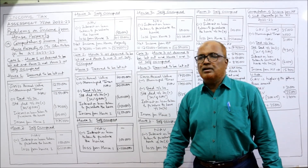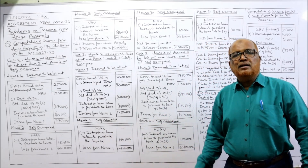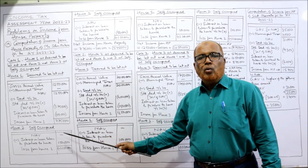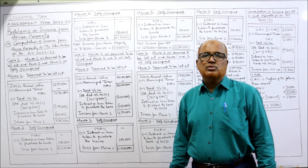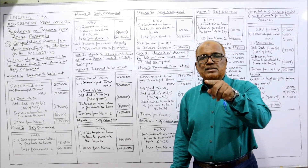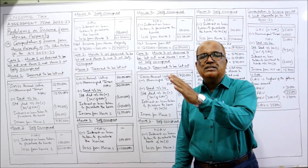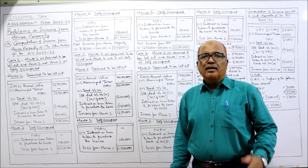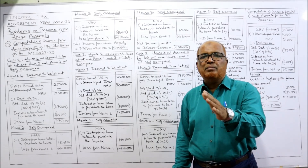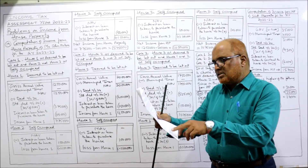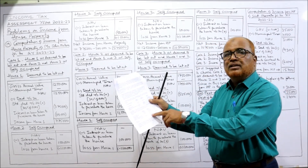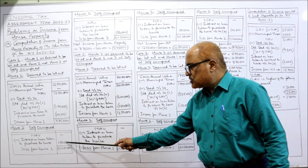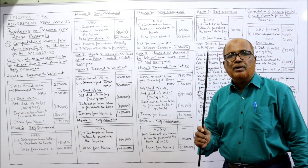Income from House 1: 12 lakh 50 thousand minus 3 lakh 75 thousand minus 1 lakh = 7 lakh 75 thousand. For Houses 2 and 3 (self-occupied), NAV is nil; only one deduction is given — interest on loan taken to purchase. If the loan is taken after 1-4-1999, the maximum deduction allowed is 2 lakh. For House 2, interest on loan is 1 lakh 50 thousand, so deduction is 1 lakh 50 thousand; loss from House 2 = minus 1 lakh 50 thousand.